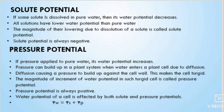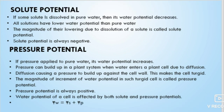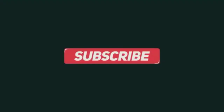When water enters, free energy increases — so Pressure Potential is always positive. A turgid cell is affected by both Solute Potential and Pressure Potential. The equation is: ΨW = ΨS + ΨP.